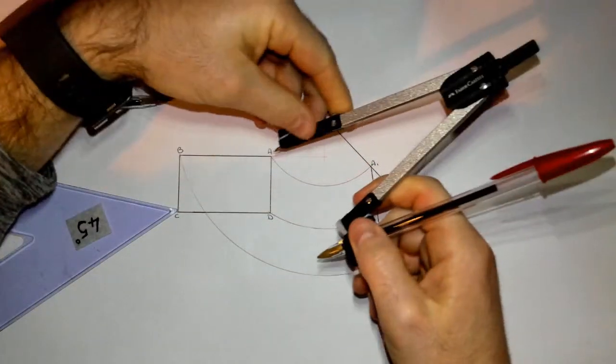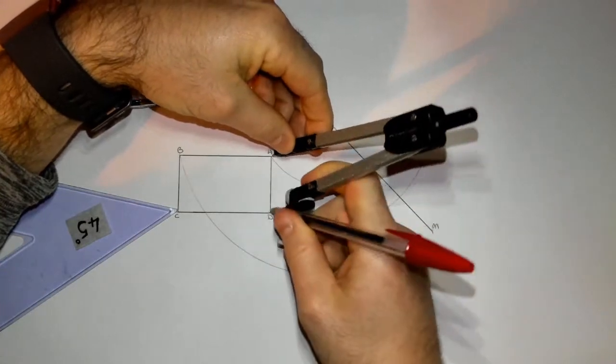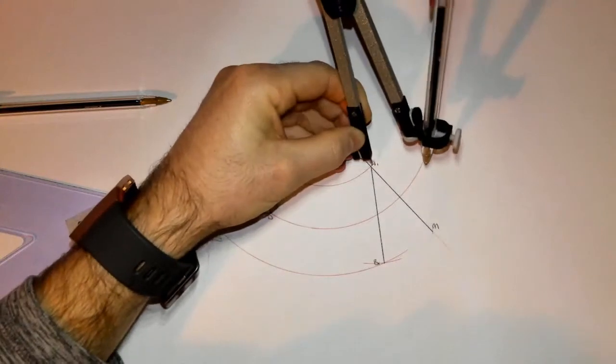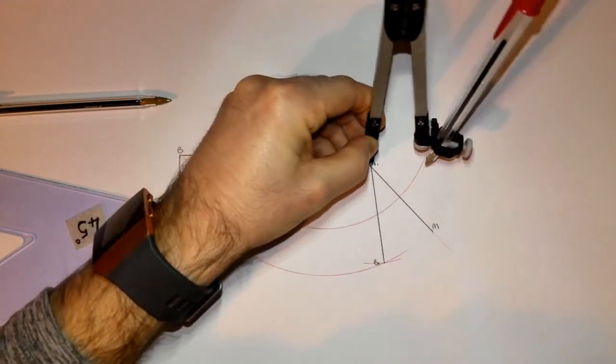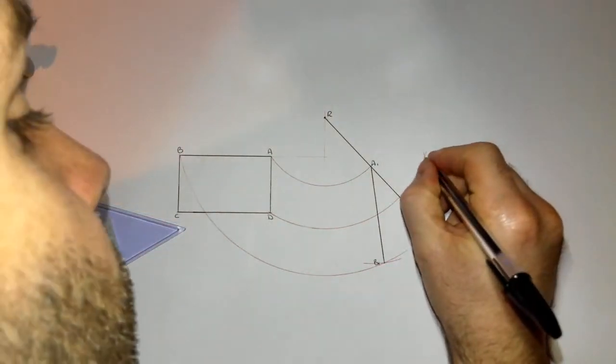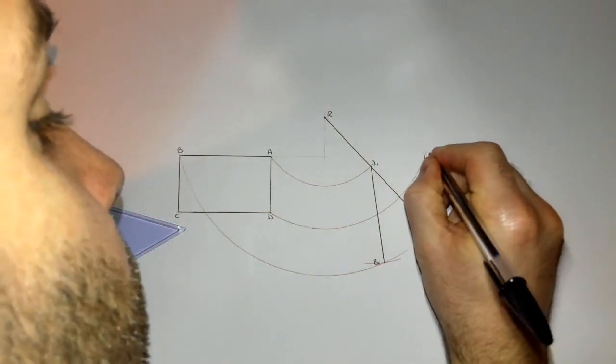And now what I'm going to do then is I'm going to take the distance from A to D, that distance there, come to A1, swing an arc. And as you can see, we have now found D1.